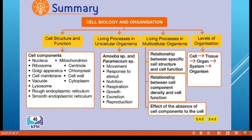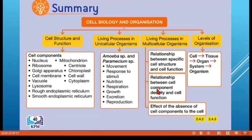In summary for Chapter 2, we have learned: cell structure and function including organelles; living processes in unicellular organisms — amoeba and paramecium — their movement, response, reproduction, growth, and nutrition; living processes in multicellular organisms — the relationship between cell structure and function, cell component density and cell function; the effects of absence of cell components; and levels of organization from cell to tissue to organ to system to multicellular organism. Please complete the exercises given. Any questions, feel free to ask. Thank you, class.